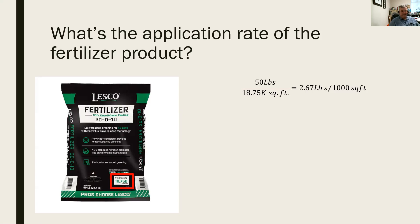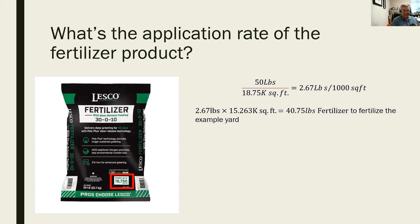To determine how much fertilizer that means for our example yard: 2.67 pounds per 1,000 square feet times 15.263 thousand-square-foot units equals 40.75 pounds of fertilizer to cover our 15,263 square foot yard. So it won't take the entire 50-pound bag to fertilize our example yard.